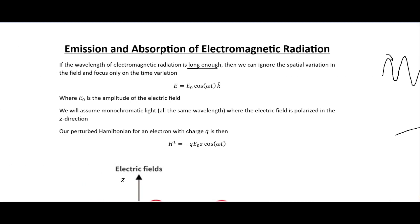These waves are moving at the speed of light, so there is a lot of variation in time. The electric field is the one we mostly pay attention to because it is much stronger than the magnetic field. It is just the time component of the electric field multiplied by a cosine function in the k direction. We will assume monochromatic light where the electric field is all polarized in the same z direction.